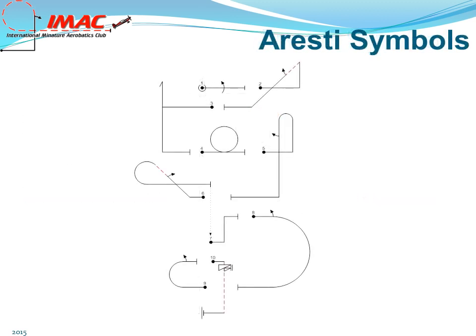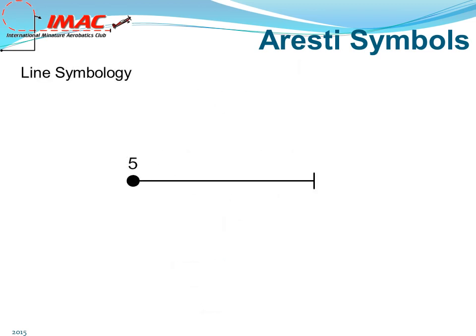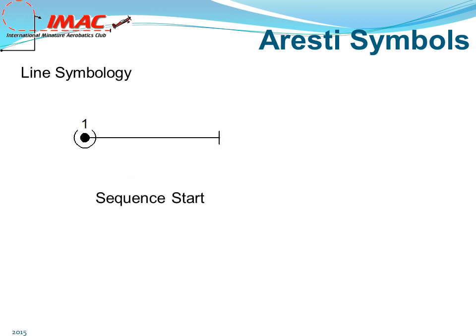A sequence is a series of figures drawn and numbered so the pilot can fly each figure in the correct order. Each figure begins with a solid dot with a figure number just above the beginning of the figure. The aircraft will follow the figure as drawn. The end of the figure is notated by a small perpendicular line. The sequence begins with figure one, and the first figure will also have a semicircle placed around the solid dot. At the end of the sequence, an additional longer line will be drawn.